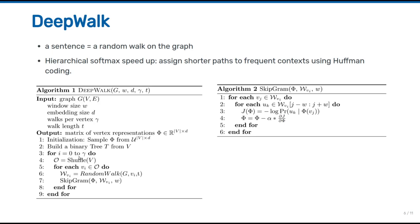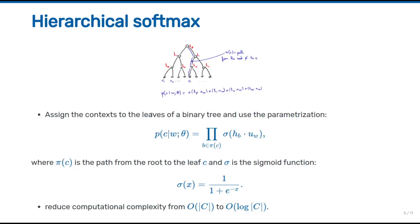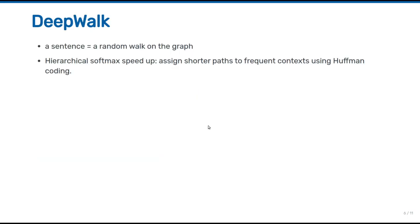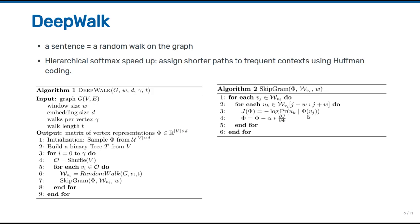The main loop runs gamma times: it shuffles all vertices, performs one random walk per vertex, and applies the skip-gram model on each walk. The skip-gram model maximizes the log-probability of context words given central words — equivalently minimizing the negative log-likelihood. Standard SGD gradient descent is used to optimize the parameter Phi.